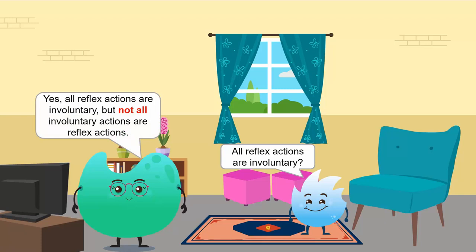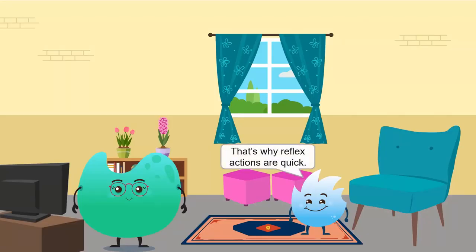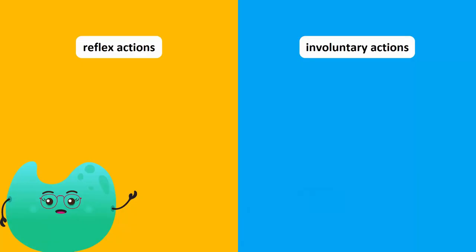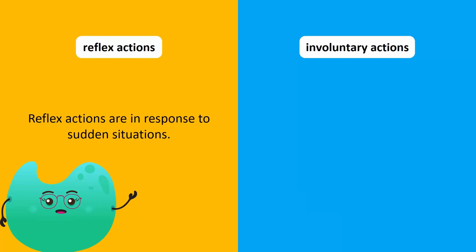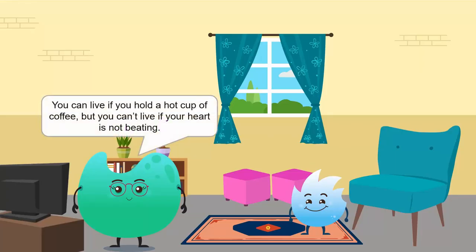Are all reflex actions involuntary? Yes! All reflex actions are involuntary, but not all involuntary actions are reflex actions. Involuntary actions involve the unconscious part of the brain that carries out those actions. But the reflex actions pathway is directly through the spinal cord and does not involve any part of the brain. That's why reflex actions are quick! Also, reflex actions are in response to sudden situations, whereas other involuntary actions are regular as they fulfill critical life processes. You can live if you hold a hot cup of coffee, but you can't live if your heart is not beating.